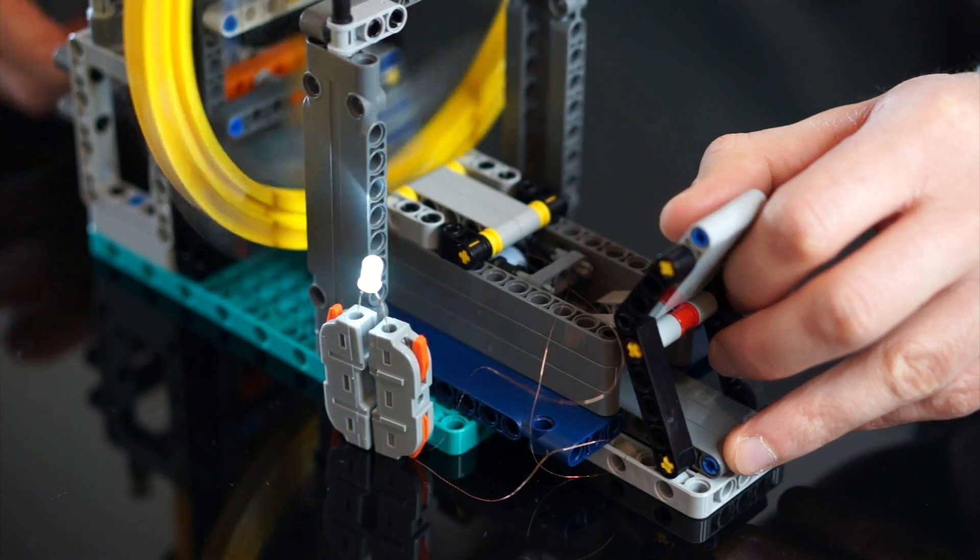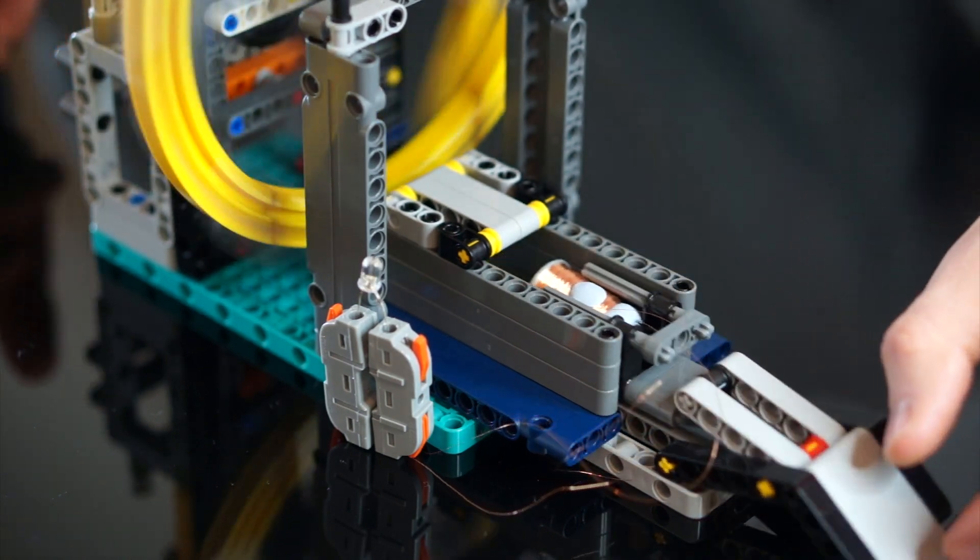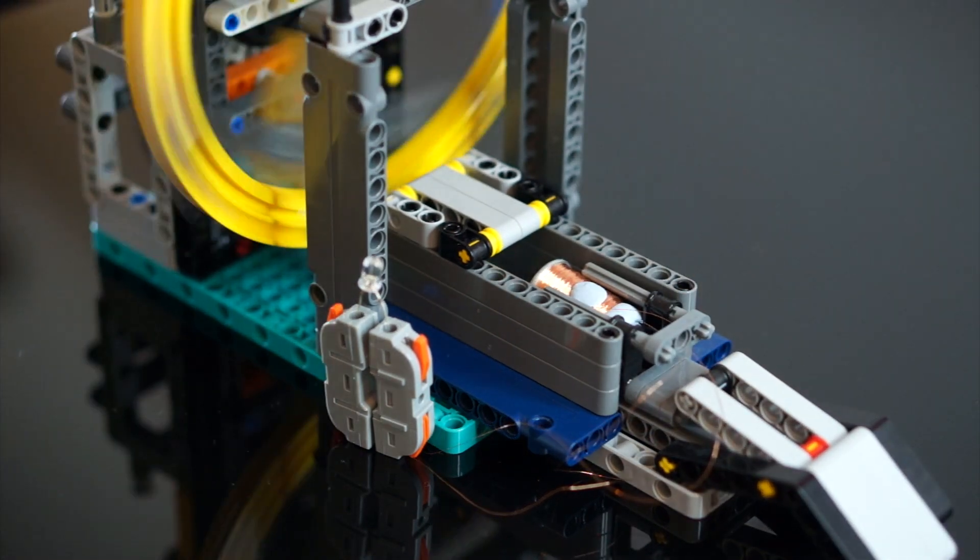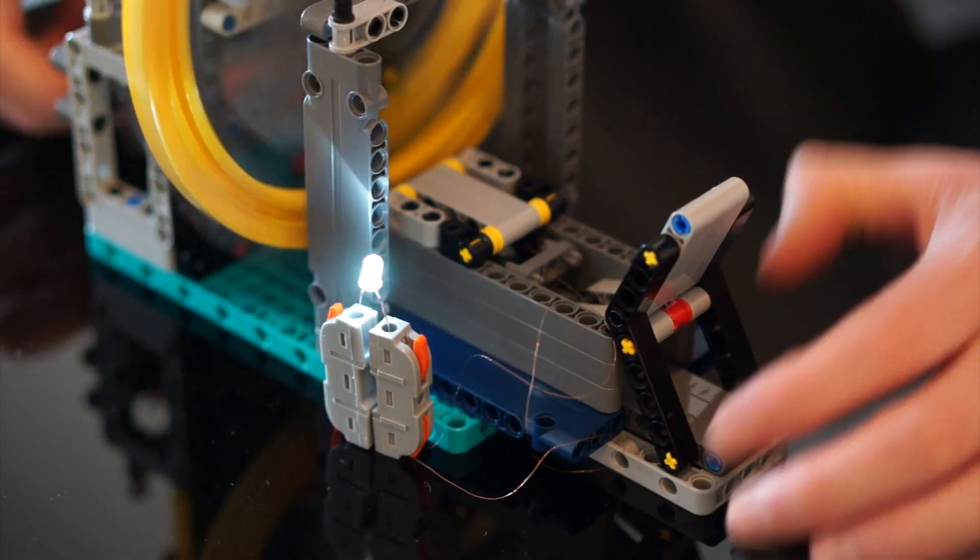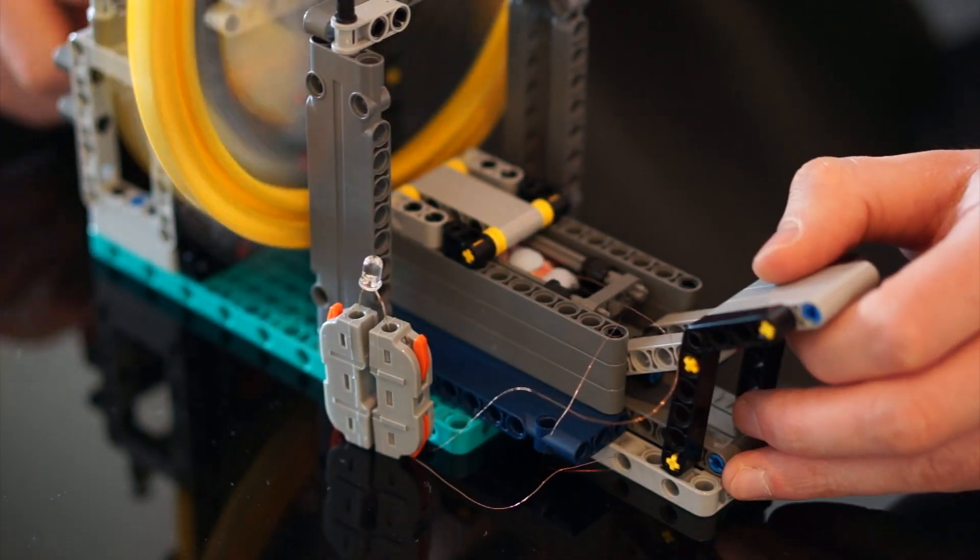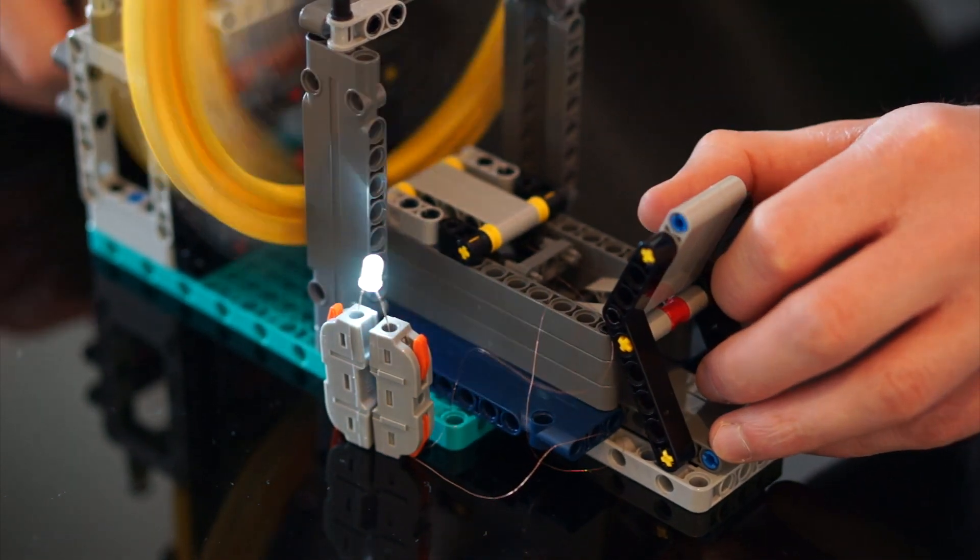The closer the coil is to the magnets the brighter the LED glows and retracting the coil dims the LED. Although it looks like the LED is flashing quite slowly it's actually flashing a lot faster in real life. It's just the frame rate of my camera making it appear to flash a little slower.